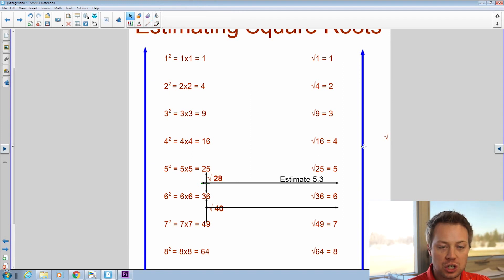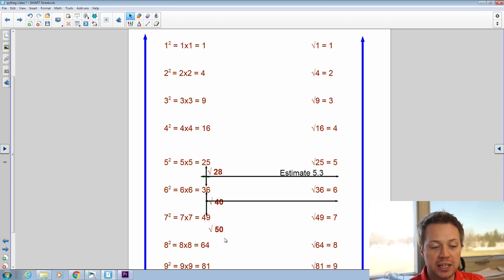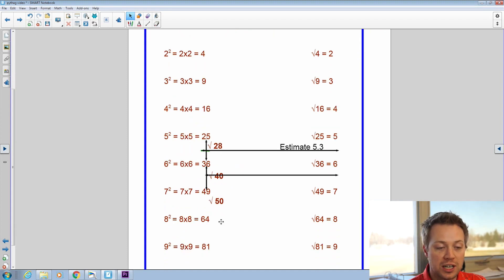What if I tried to find the square root of 50? So again, I'm going to go here, and 50 falls between the perfect squares 49 and 64. It falls really, really close to 49. So basically, I'm just going to say my estimate is going to be 7.1 for the square root.